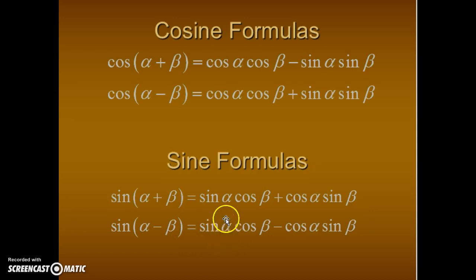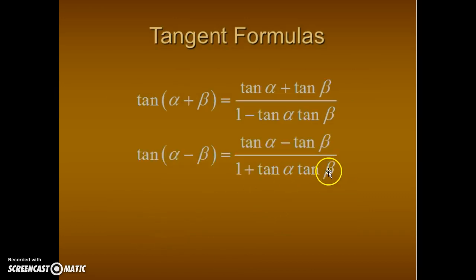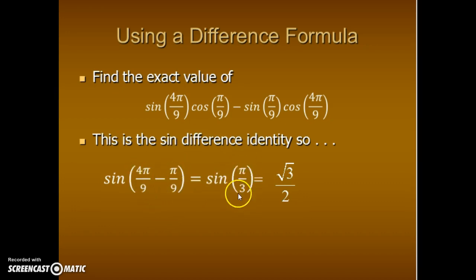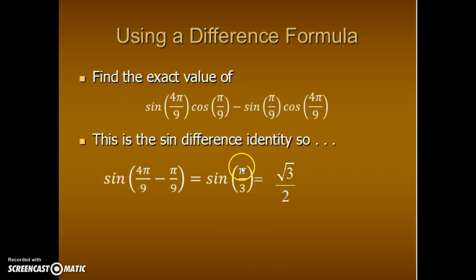We can now identify angle alpha and angle beta and find their difference. Here alpha is 4π over 9 and beta is π over 9, so the difference is 3π over 9. That reduces algebraically to π over 3, which is an exact value angle measure. Sine of π over 3 is in quadrant 1, so the answer is the square root of 3 over 2.